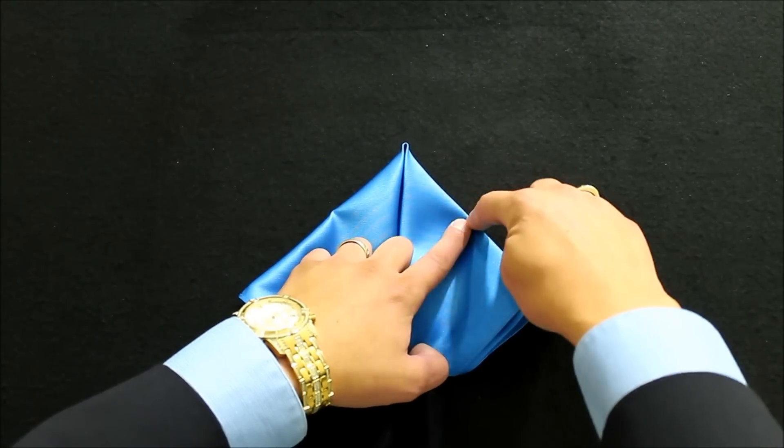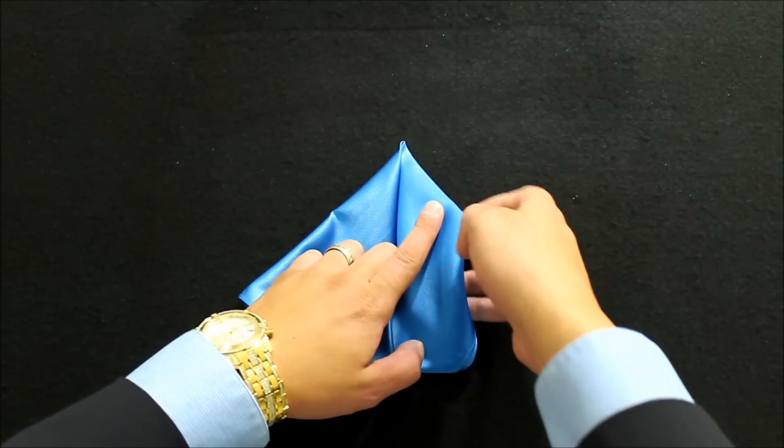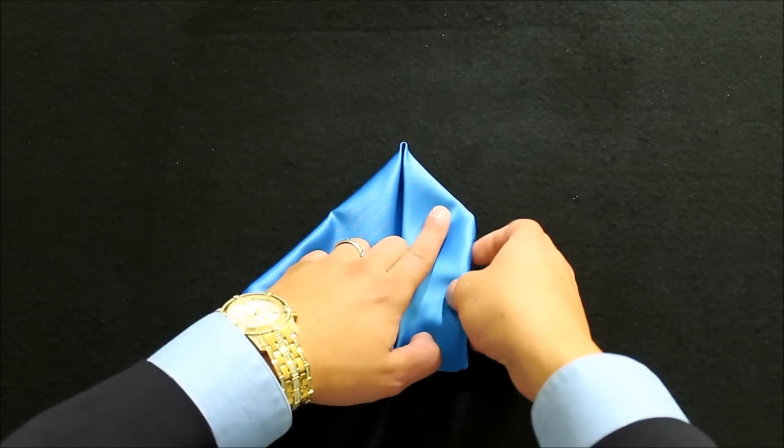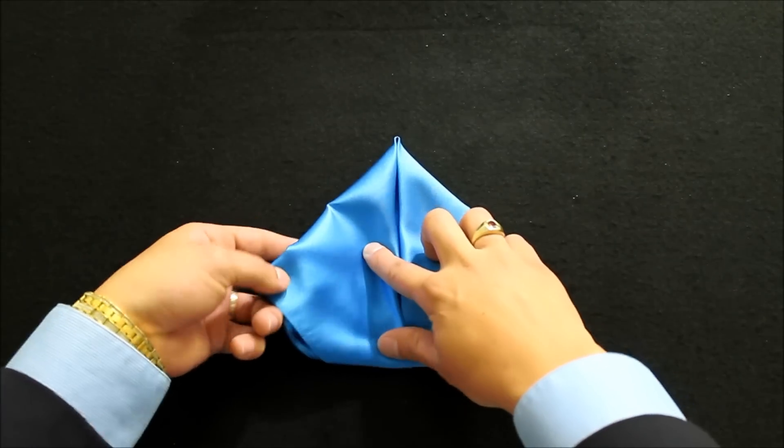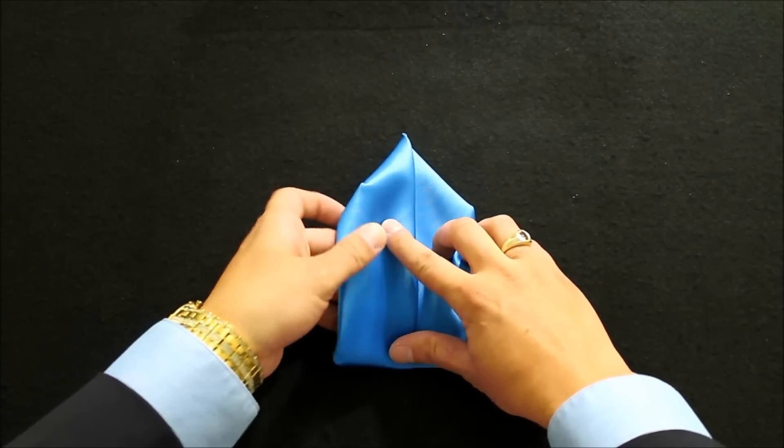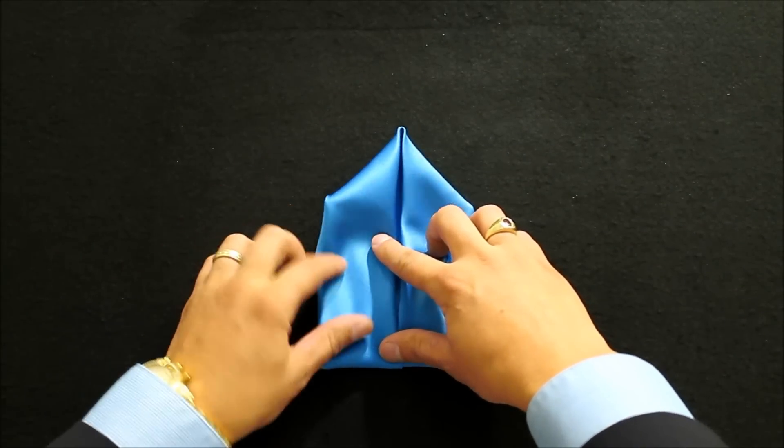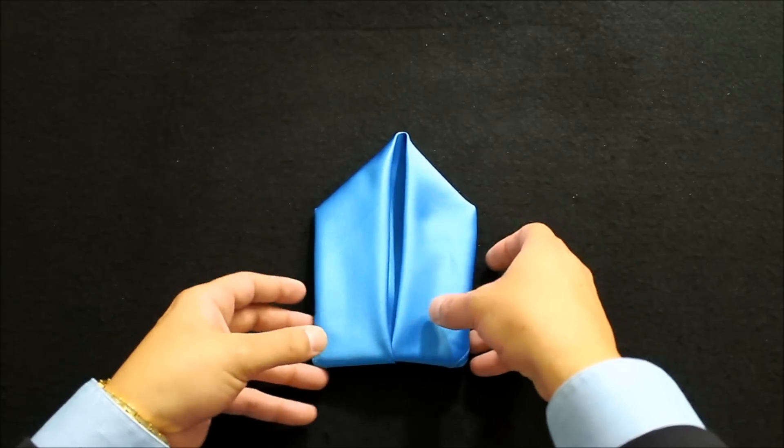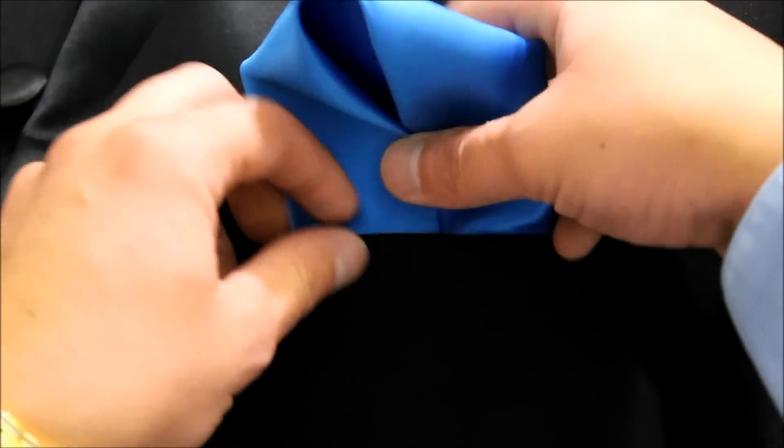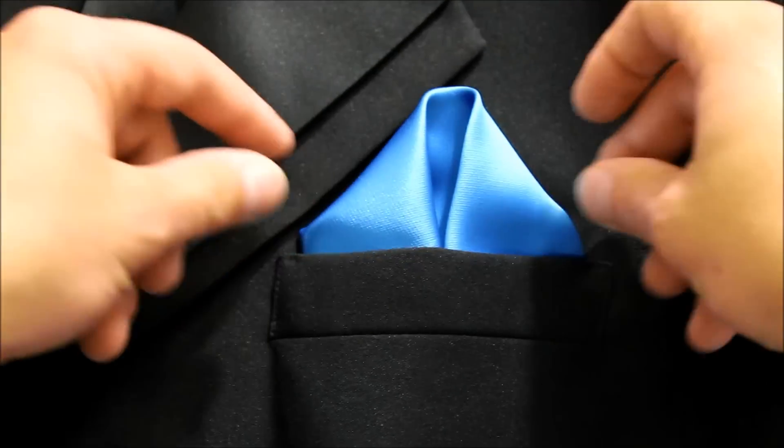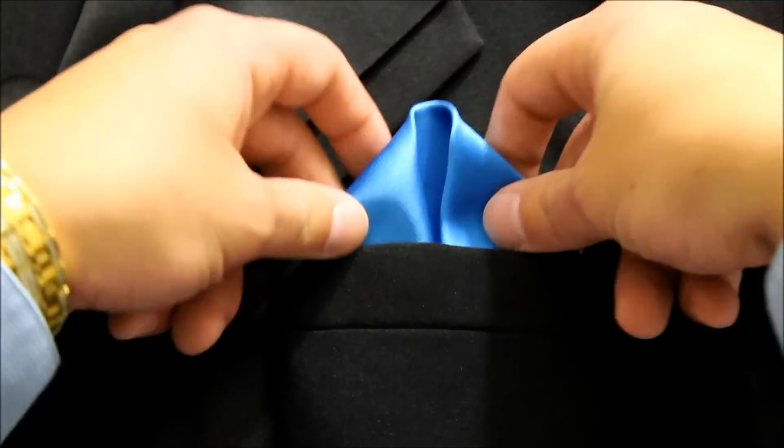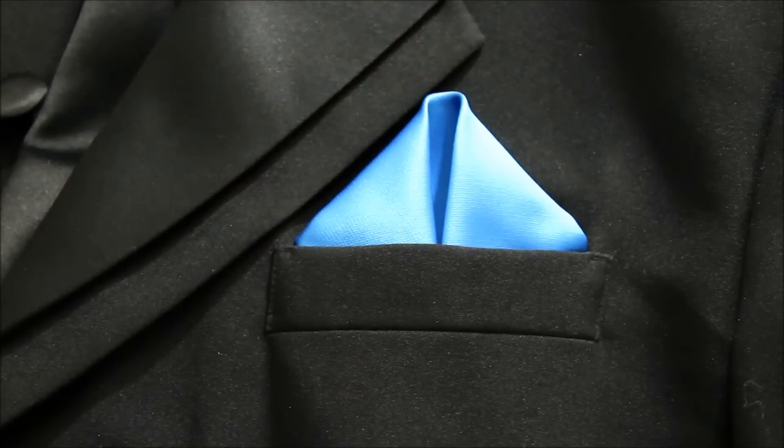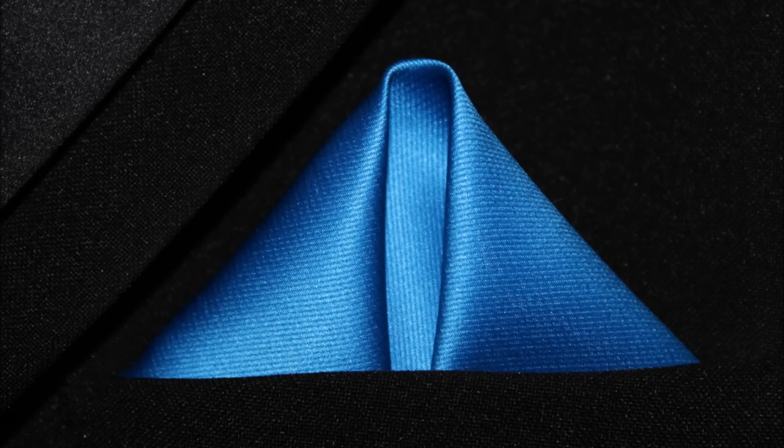So if our corners go from here to here approximately in our pocket, we just fold that into the back. So that's how you do the winged puff.